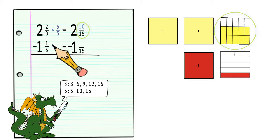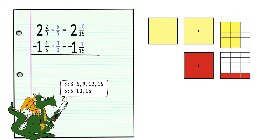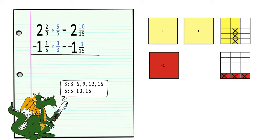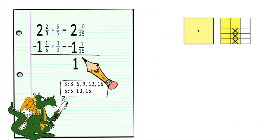And we can confirm that by looking back at our tiles. We will need to repeat this procedure for changing one-fifth into three-fifteenths. Now I can subtract one and three-fifteenths from two and ten-fifteenths, getting one and seven-fifteenths.